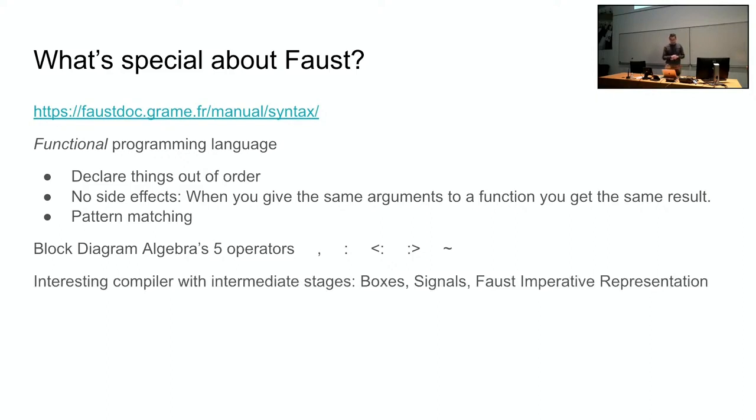It also has a very interesting compiler with intermediate stages and I'm going to be talking about those things more today. So those intermediate stages are boxes, signals and the Faust imperative representation. And also at the end of the Faust imperative representation, Faust gets translated into target languages, such as C++, WebAssembly and so on. But I won't necessarily be talking about those, I'll be talking about the intermediate representations like boxes, signals and FIR.